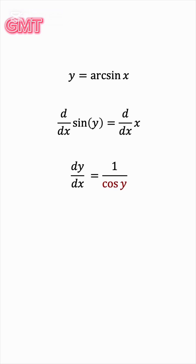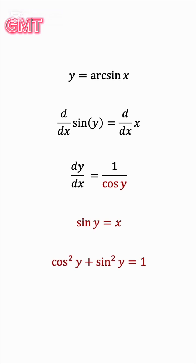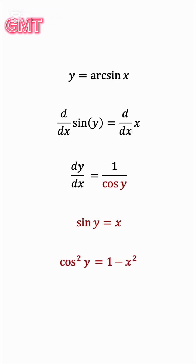We can actually represent cosine y purely in terms of x, because remember, sine y equals x. And cosine y and sine y are related by the famous Pythagorean identity. So, replacing sine y by x, we can solve for cosine y — take x squared to the other side, and then take the square root of both sides, with the plus or minus, of course.